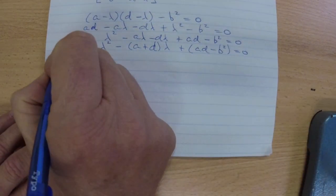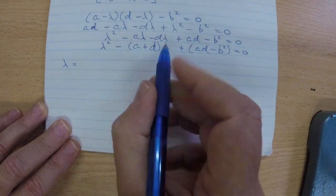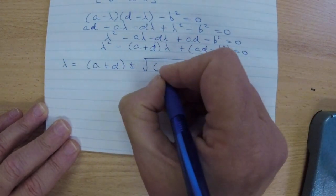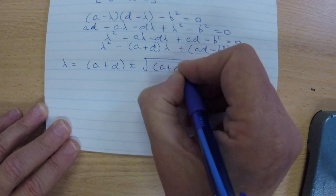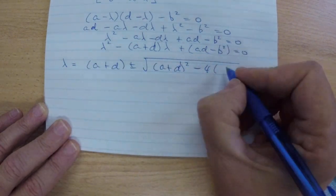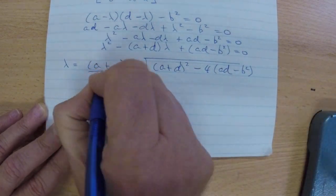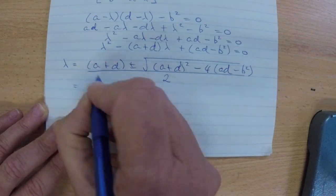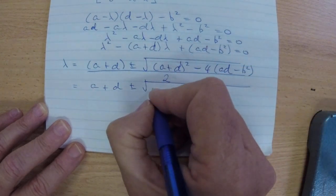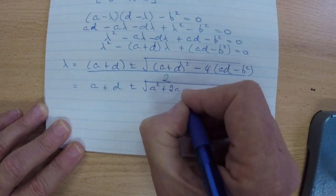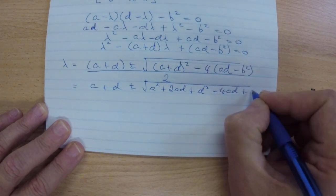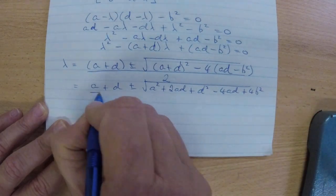This is where the quadratic formula will be required to solve for lambda. So minus of B would actually just be A plus D plus or minus the square root of B squared, that's (A plus D) squared minus 4 times AD minus B squared, all divided by 2. A plus D plus or minus the square root of (A plus D) squared, well that's A squared plus 2AD plus D squared, minus 4AD plus 4B squared, all divided by 2.